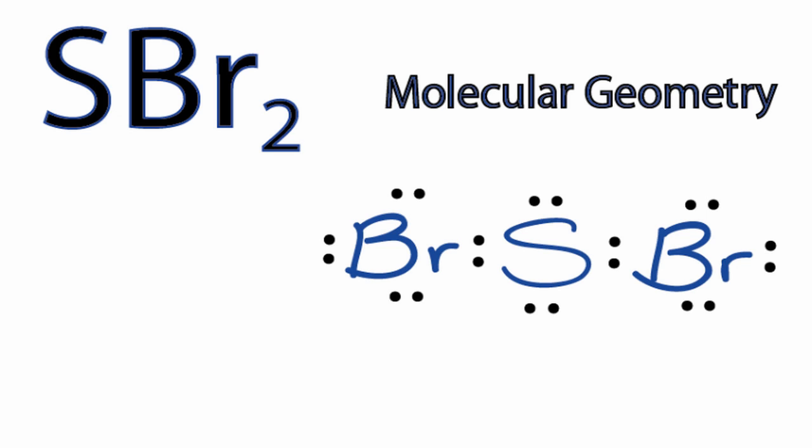However, we have the two bromines on either side. That makes sense. But we need to take into account these lone pair of electrons. They'll influence the molecular geometry for SBr2.